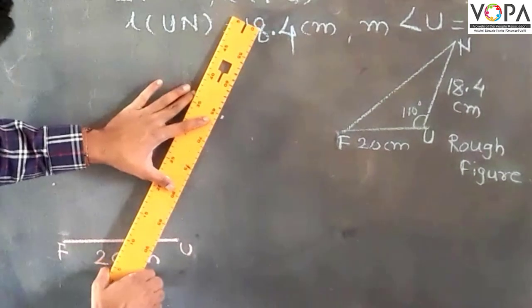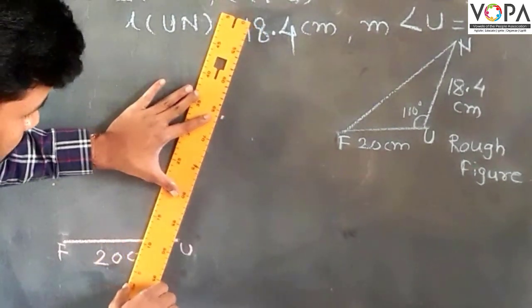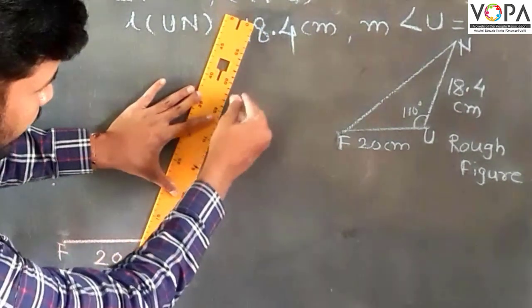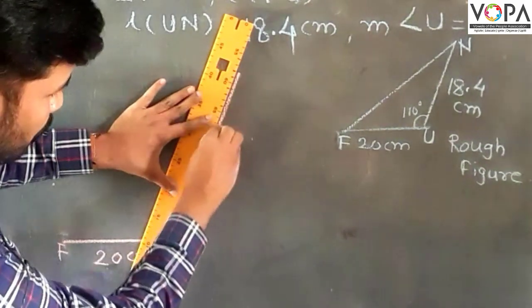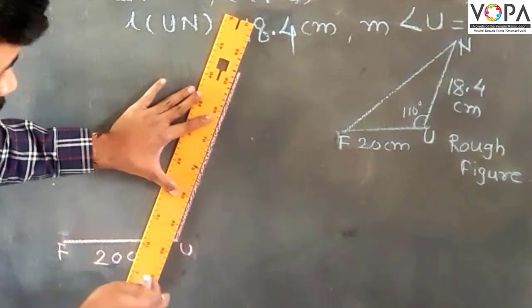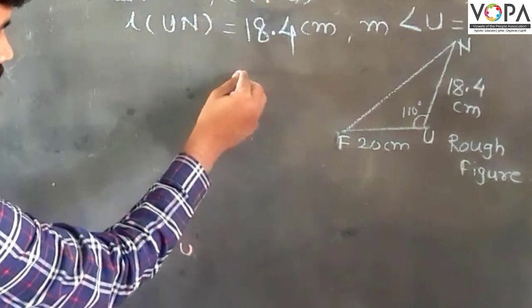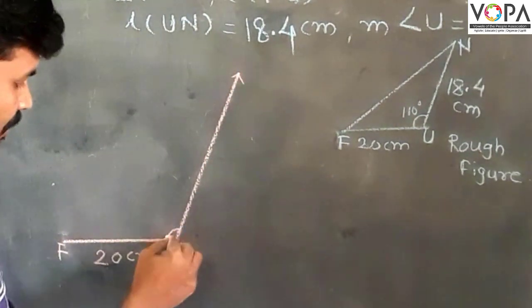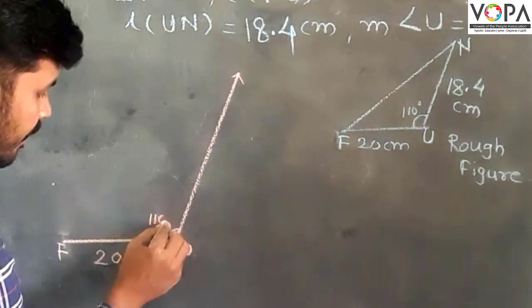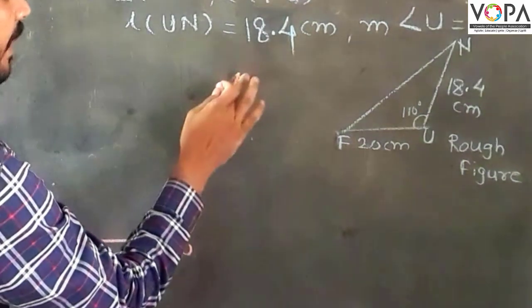After that, with the use of the ruler, join that point and vertex U. So here is the 110 degree angle. Extend the side for the figure.